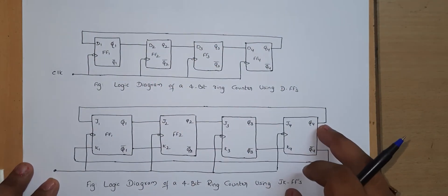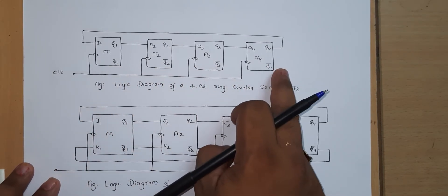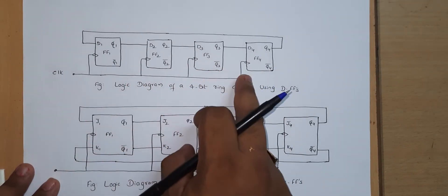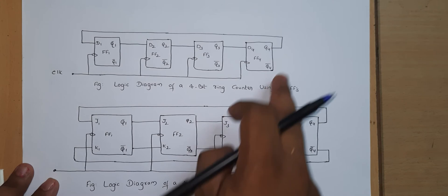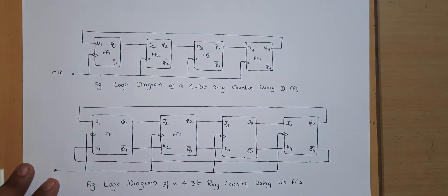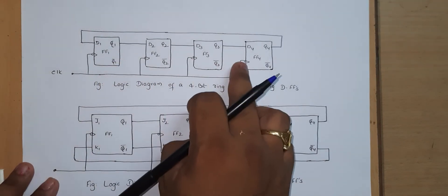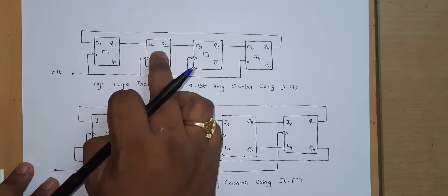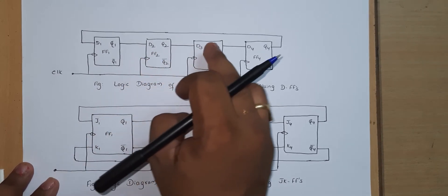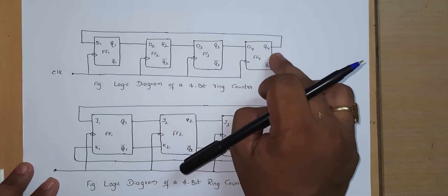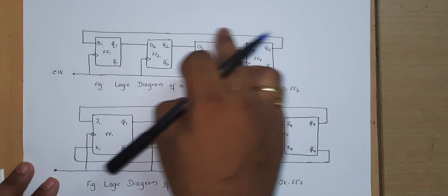Observing the circuit, there are 4 D flip-flops connected, and all 4 flip-flops are synchronously applied to a single clock bus — that is why it is called a synchronous model. The output of the first flip-flop is connected to the input D2 of the second flip-flop; Q2 is connected to D3; Q3 is connected to D4. And importantly, the output Q4 of the last flip-flop is connected back to the input of the first flip-flop.